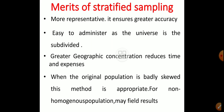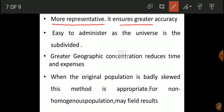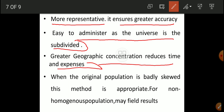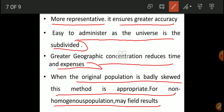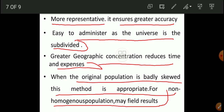The merits of stratified sampling are: it ensures greater accuracy; it is easy to administer as the population is subdivided; it allows greater geographic concentration; and it reduces time and expenses. When the original population is badly skewed, this method is appropriate. For a non-homogeneous population, stratified random sampling gives proper results.